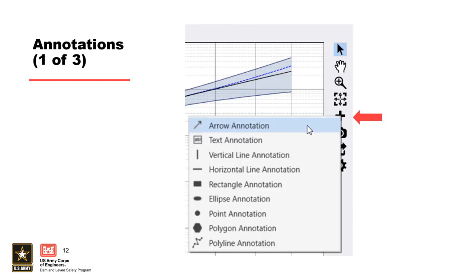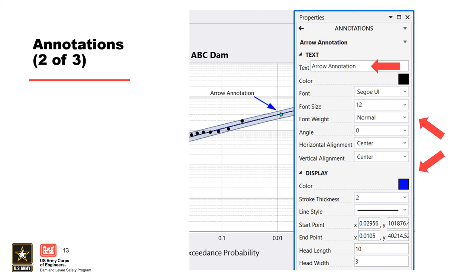The annotation menu has multiple options that can be used to highlight important features of the plot. Common annotations include the arrow, text, and horizontal line. Edits to the annotation can be made in the properties window. You can change the text and update the text formatting, and you can also update the formatting for the arrow.